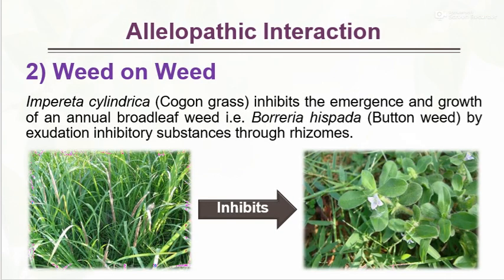Weed on weed allelopathic interaction: Imperata cylindrica, or Cogon grass, inhibits the emergence and growth of annual broadleaf weeds, including Poria hispida (button weed), by exuding inhibitory substances through the rhizomes. In this image we can see Imperata cylindrica inhibiting effects on broadleaf weeds.